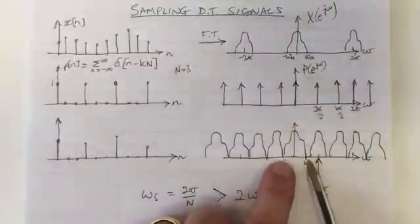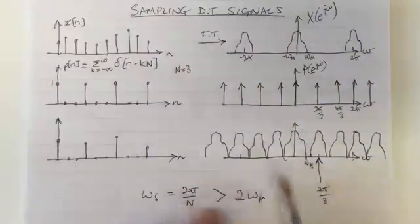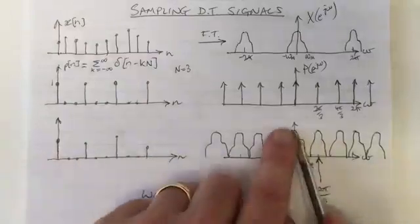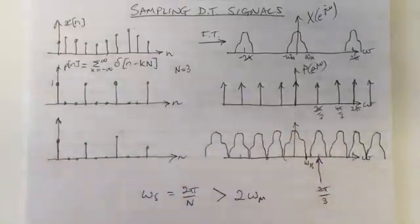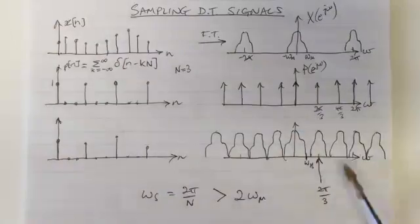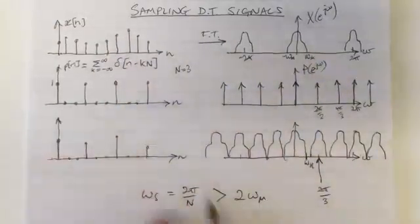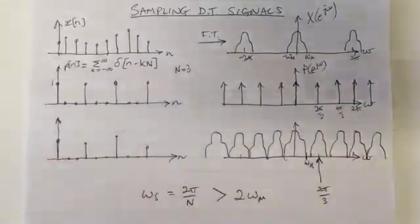And the way to do that multiplication in the frequency domain is to implement a filter in the time domain that has that ideal low pass nature. So an ideal low pass filter would be able to recover the original signal if you've sampled at a rate that satisfies this equation.